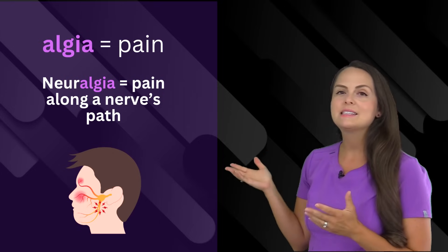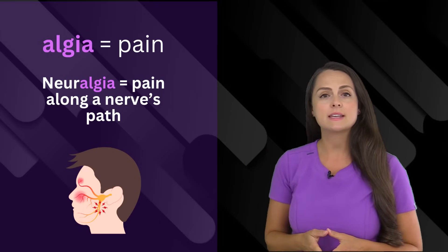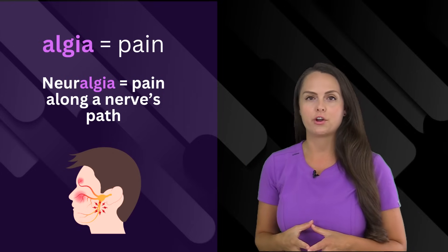Next up is alga. This means pain. When someone says they have neuralgia, that means that they have pain along a nerve path.